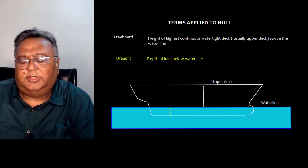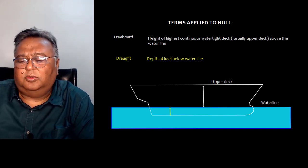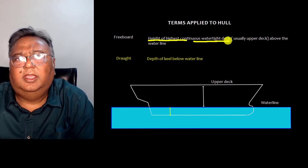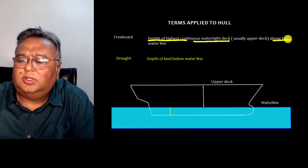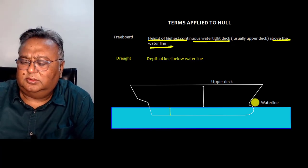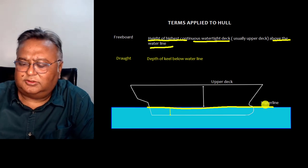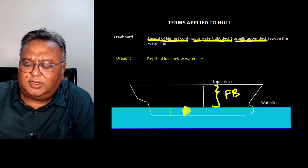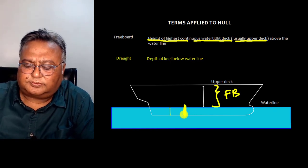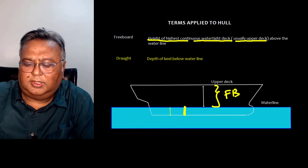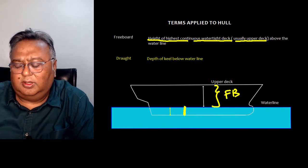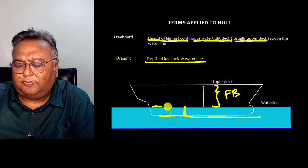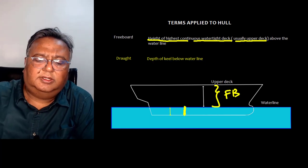Now let's talk about terms applied to the hull. Freeboard is the height of the highest continuous watertight deck — usually the upper deck — above the waterline. As shown here, this distance is the freeboard. Draft is the depth of the keel below the waterline, so the distance from the keel to the waterline is the draft.